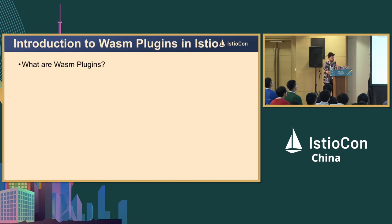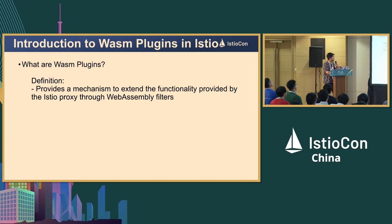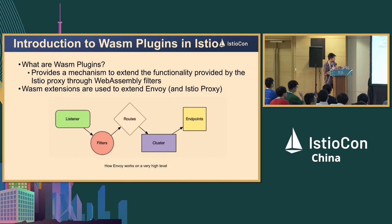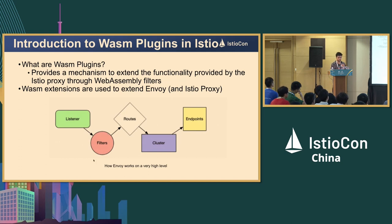So what are Wasm plugins? They provide a mechanism to extend the functionalities of Envoy — in our case, it's Istio proxy — through WebAssembly filters. To understand how exactly it's done, we need to understand the high-level architecture of Envoy. We have listeners, filters, routes, clusters, and endpoints. What Wasm plugins do is add a new filter in the filter chain.